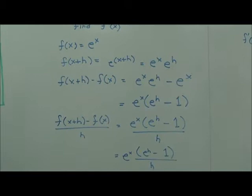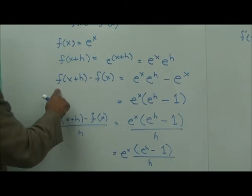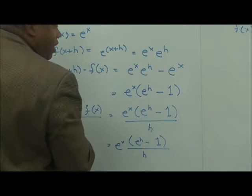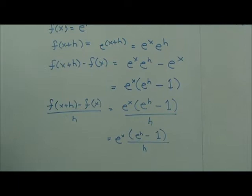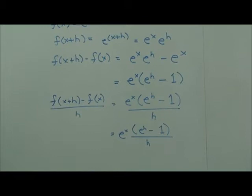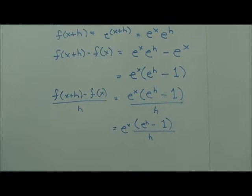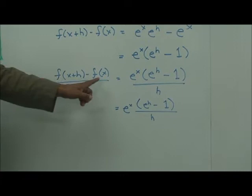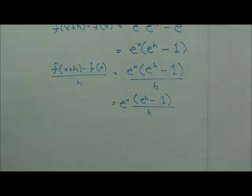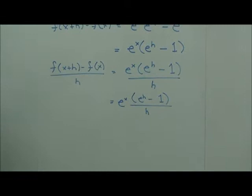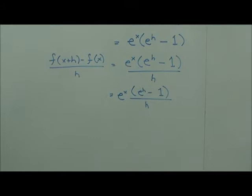Step three: f of x plus h minus f of x equals e to the x times e to the h minus e to the x. We factor out the GCF and get e to the x times the quantity e to the h minus 1. Step four: f of x plus h minus f of x divided by h gives us e to the x times e to the h minus 1, all divided by h.